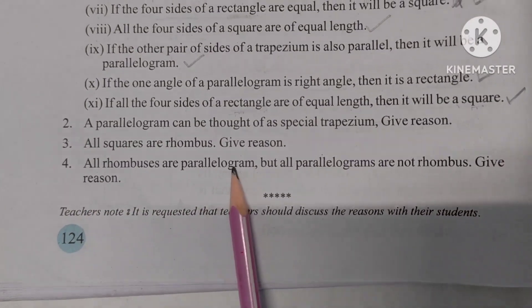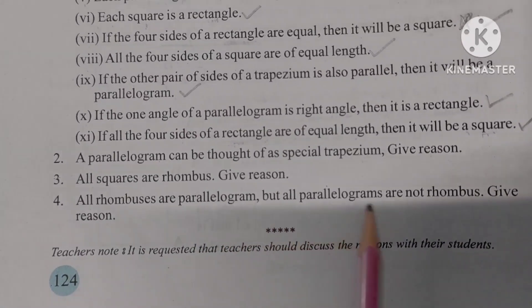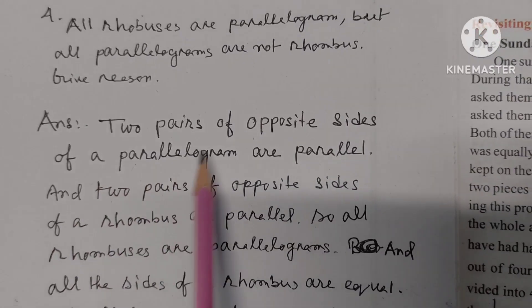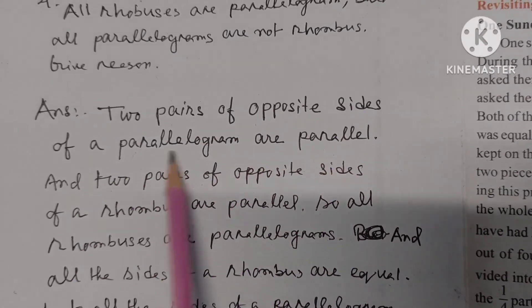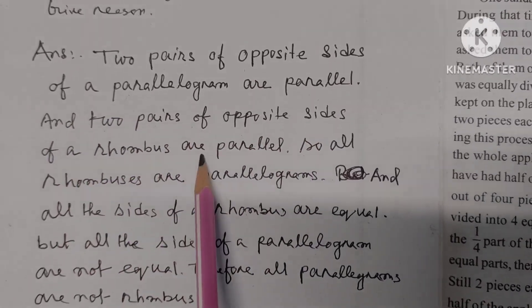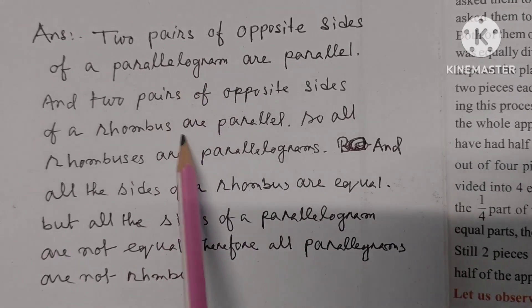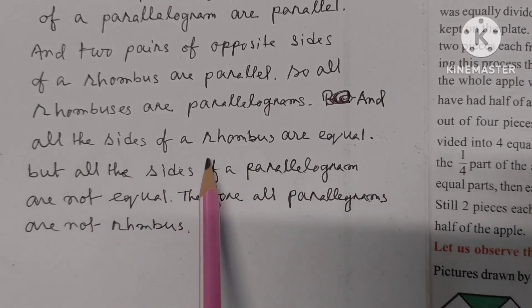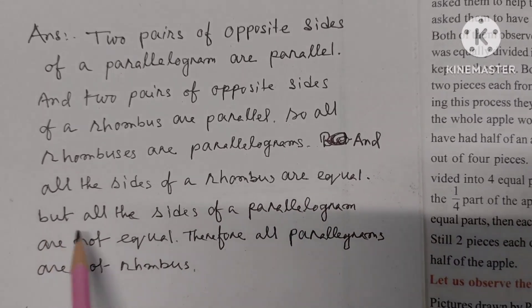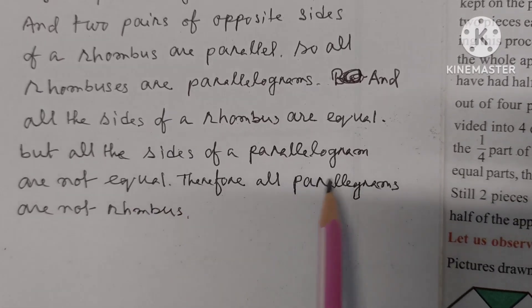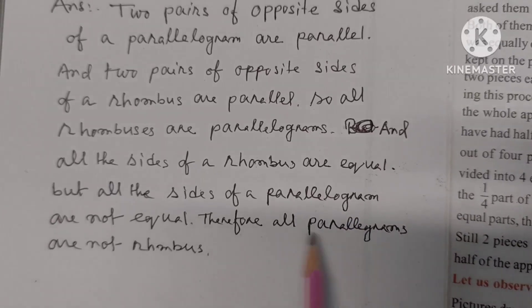Number 4: All rhombuses are parallelograms. In a rhombus, two pairs of opposite sides are parallel. This is the defining property of a parallelogram. However, all sides of a rhombus are equal, while in a general parallelogram, opposite sides are equal but not all four sides are necessarily equal. Therefore, all rhombuses are parallelograms, but not all parallelograms are rhombuses.